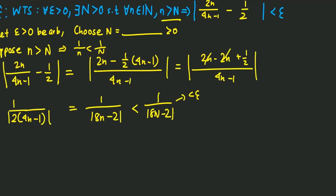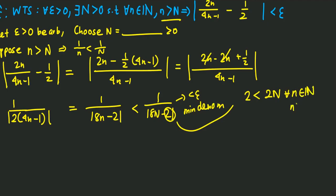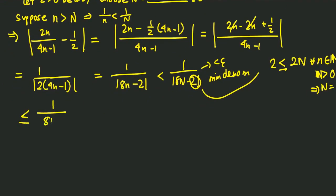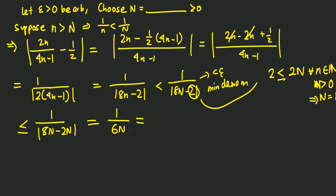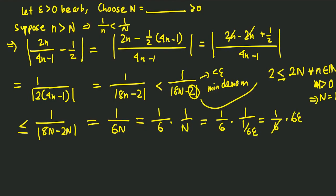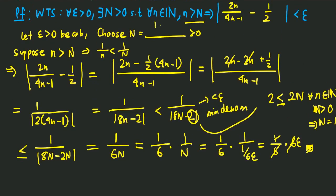We make this less than epsilon. To do that, we minimize the denominator so we get something bigger. If we show that the bigger thing is less than epsilon, then the original function is also less than epsilon. We replace the 2 by 2n, since n goes from 1 to infinity, and we end up getting N = 1/(6ε) as our N, which proves the statement.